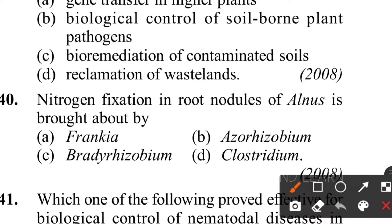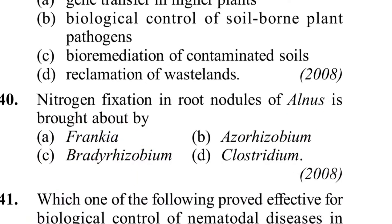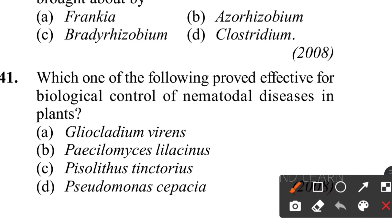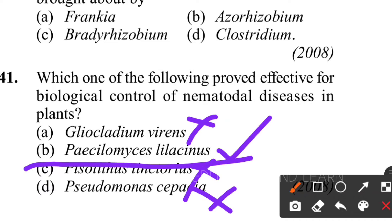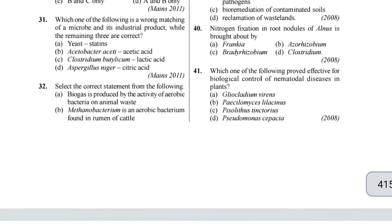Fortieth question: nitrogen fixation in root nodules of Alnus is brought by Frankia. Frankia is a microbe symbiont with root nodules of several non-legume plants, such as Casuarina and Alnus. Both Rhizobium and Frankia are free-living in soil but as symbionts can fix atmospheric nitrogen. Forty-first question: effective for biological control of nematodal disease in plants - option B, Acylomyces (Myrothecium?) lecanii - is the correct answer.